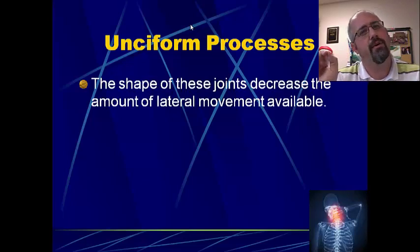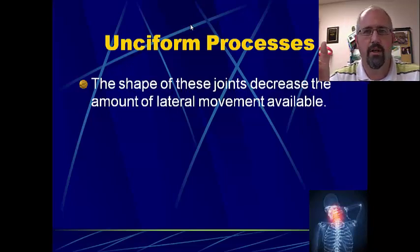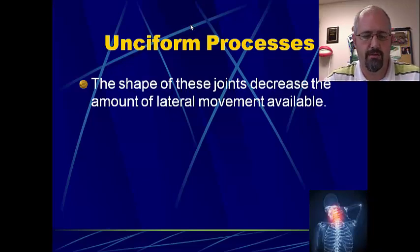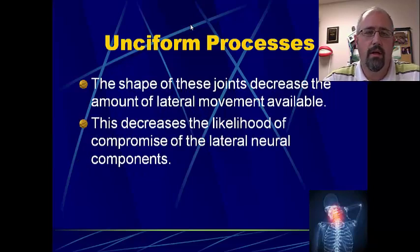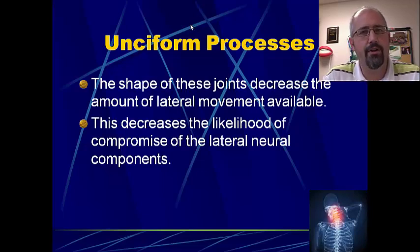The other important thing to remember about the unciform processes is that the very shape and positioning of them actually decreases the amount of lateral flexion that's available. So the amount of lateral motion is actually minimized by these joints of Luschka. Consequently, whenever we actually go into lateral flexion, there's an element of rotation that occurs. As you try to side flex your head and neck, you begin to rotate so that you get an increase in range of motion, but to stay in true side flexion, there's actually not a lot of motion available. Because of the shape of the vertebrae, a straight lateral disc bulge is very unlikely.